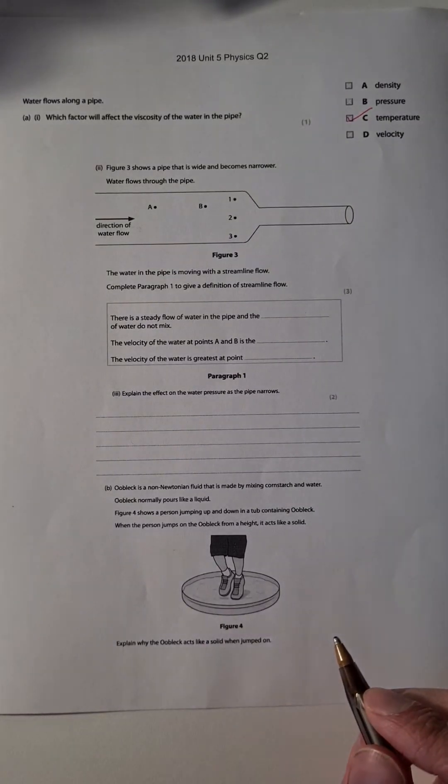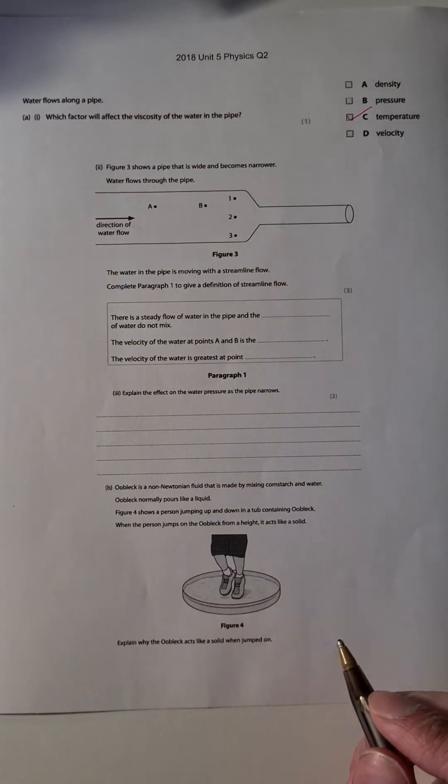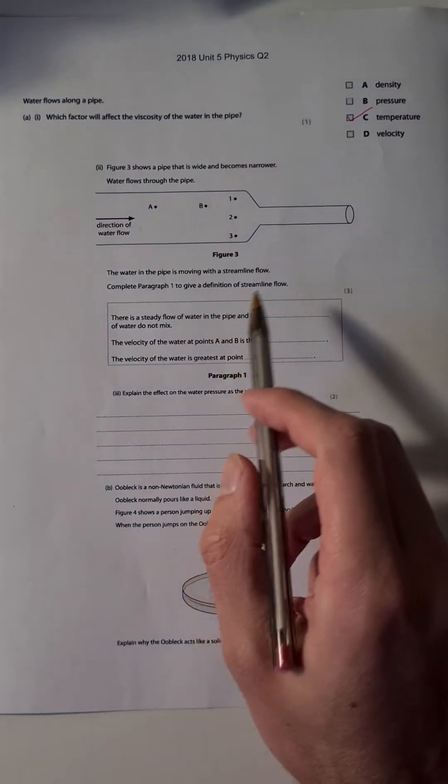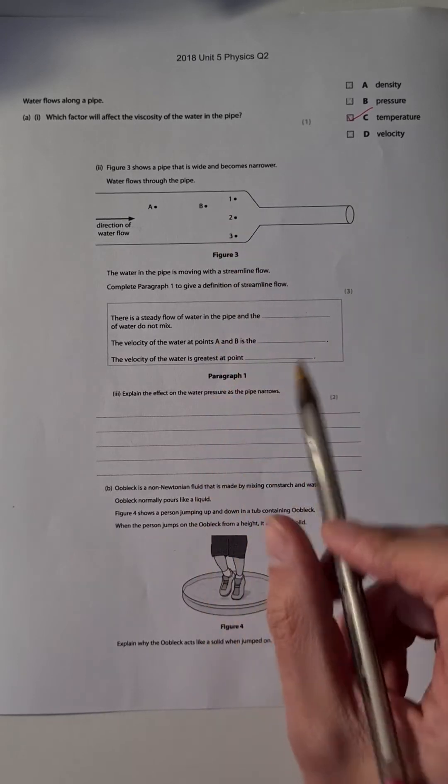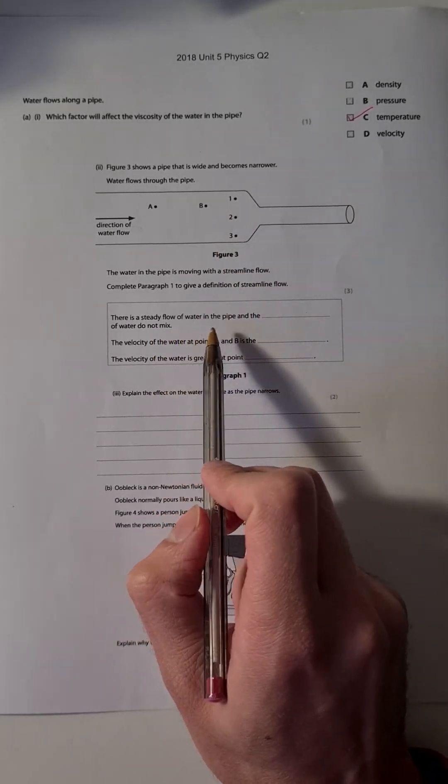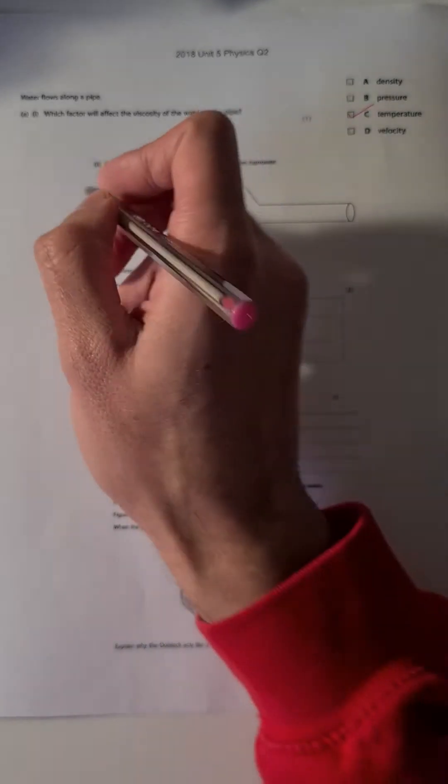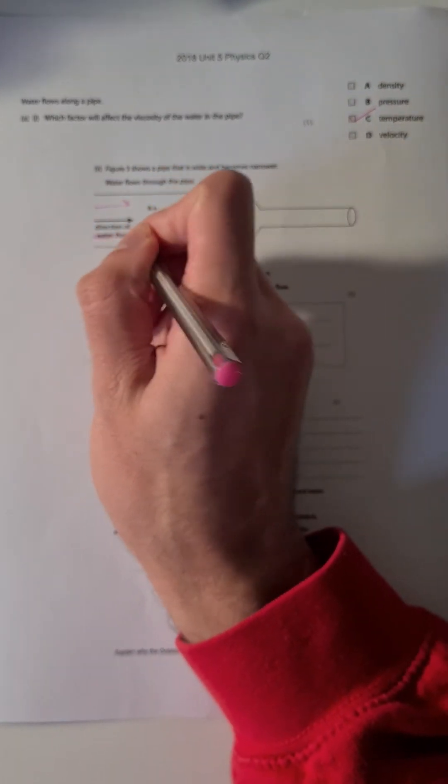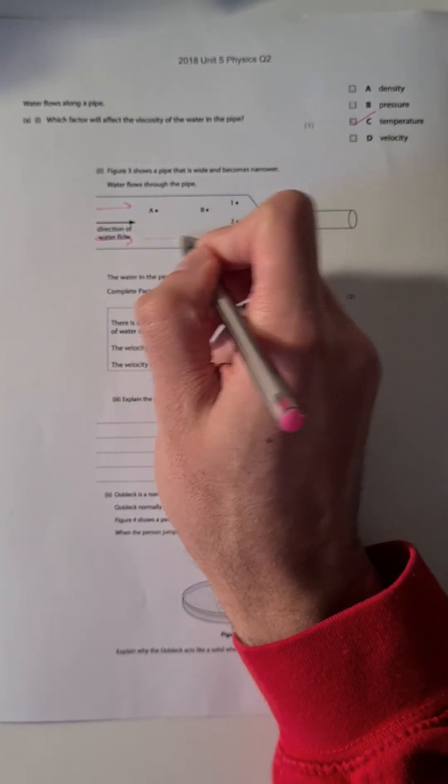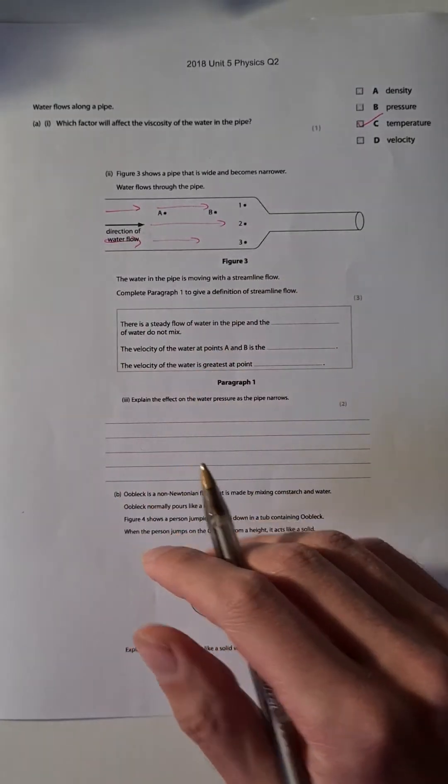Now we've got to do the water in the pipe is moving with streamline flow. Complete paragraph one to give a definition of streamline flow using this diagram. There was a steady flow of water in the pipe, and something of water do not mix. Now it's talking about the different layers. So if we've got a steady streamline, we'll have these layers of water all traveling in the same direction, and those layers do not mix.